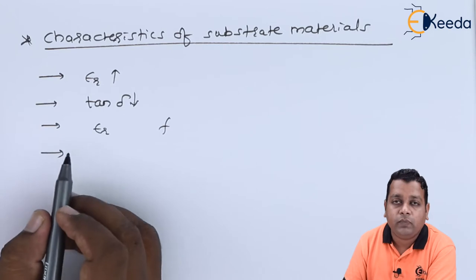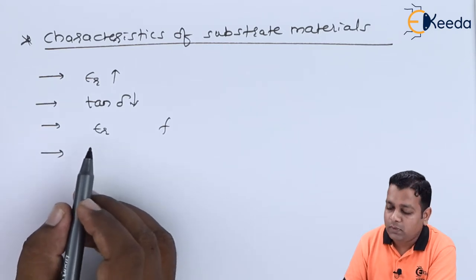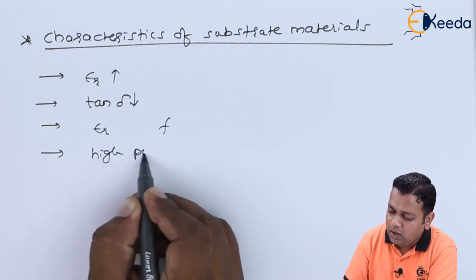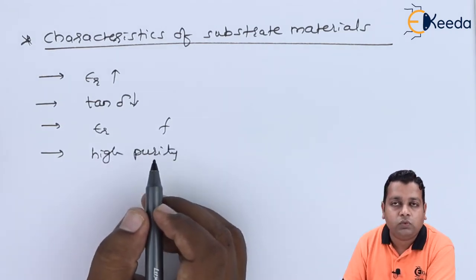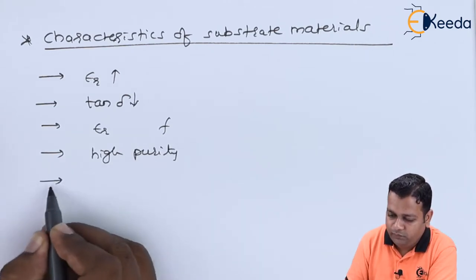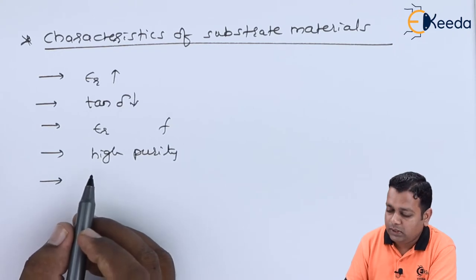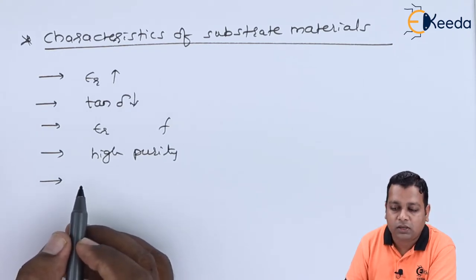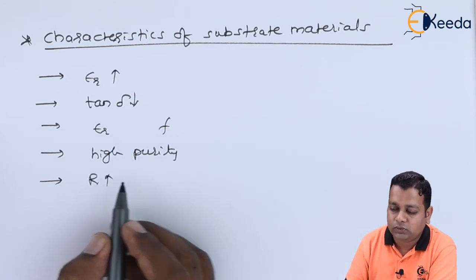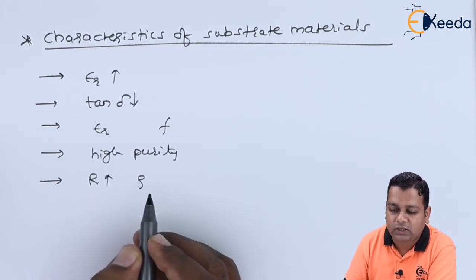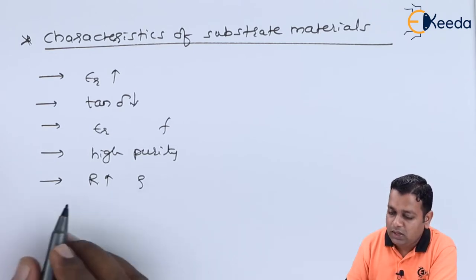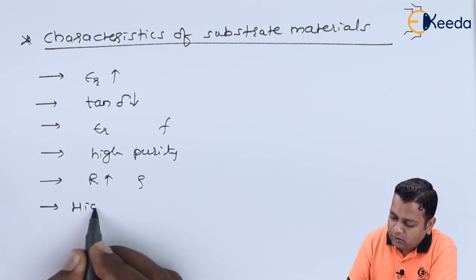The purity of the substrate material is very high. They also have constant thickness and very good surface smoothness. The resistivity value, represented by rho, is high, the electric strength is also high, and they exhibit high thermal conductivity.